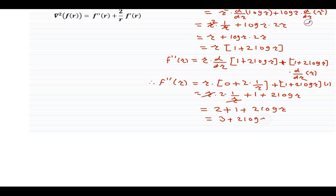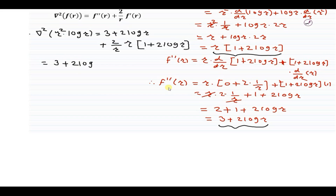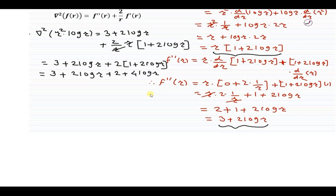Now substituting into the formula: ∇²(r² log r) = f''(r) + (2/r)·f'(r) = (3 + 2 log r) + (2/r)·r(1 + 2 log r). The r cancels in the second term, giving (3 + 2 log r) + 2(1 + 2 log r) = 3 + 2 log r + 2 + 4 log r = 5 + 6 log r.